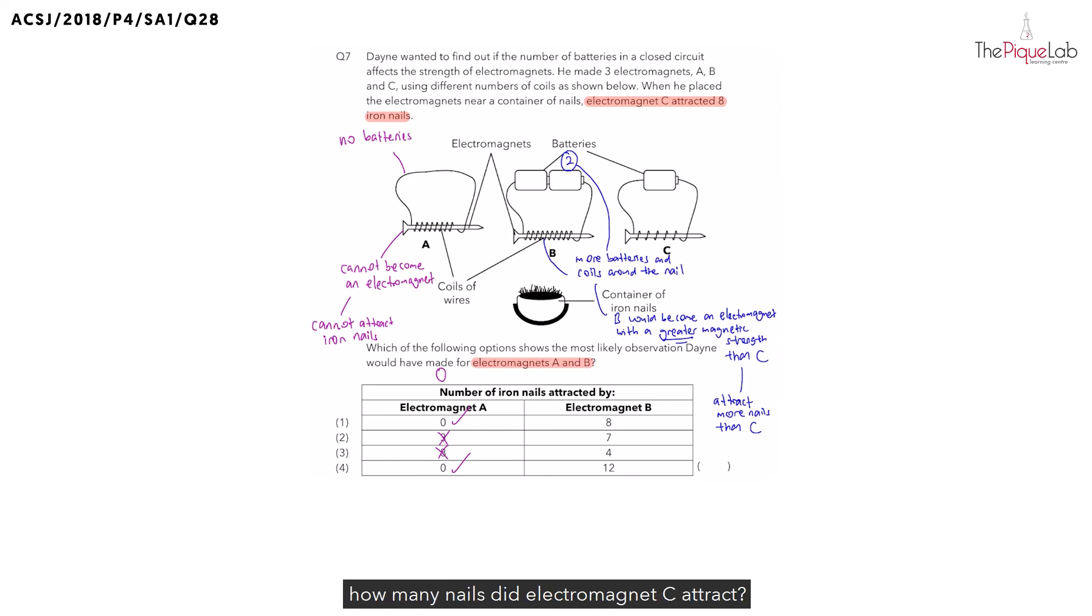Electromagnet C attracted 8 iron nails. So for B, we know it will attract more than 8 in total.